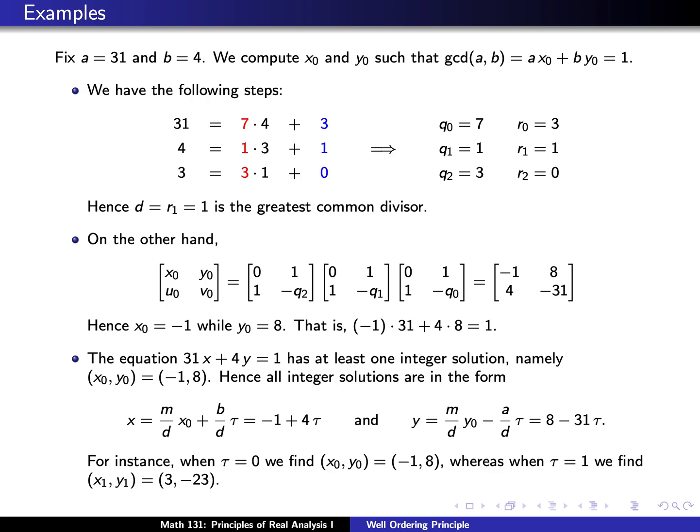Finally, putting all of this together, we can find infinitely many integer solutions. Given any integer τ, we have a solution x = -1 + 4τ and y = 8 - 31τ. So for example, when τ = 0 we find our initial solution (-1, 8), and when τ = 1 we find a new integer solution, namely (3, -23). So not only are there infinitely many integer solutions, but we actually have a formula that tells us exactly what they are. Thanks for listening.